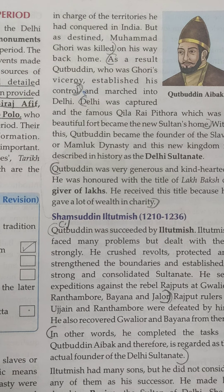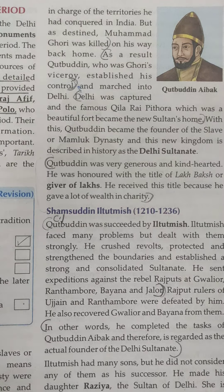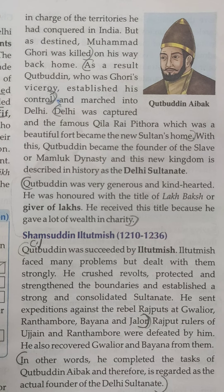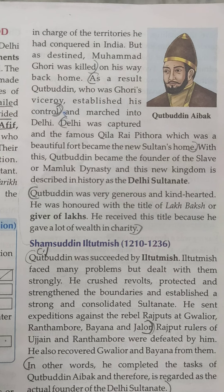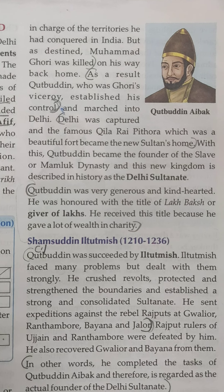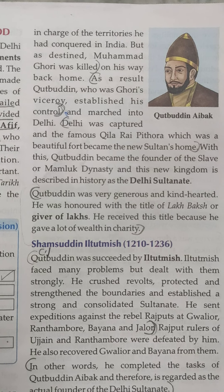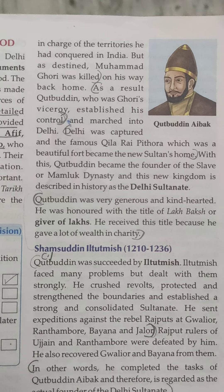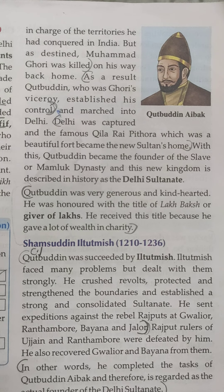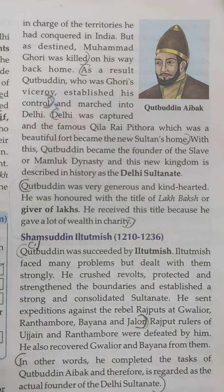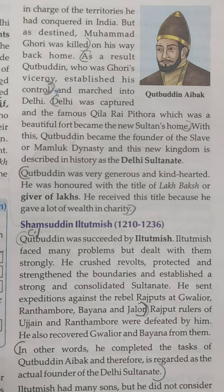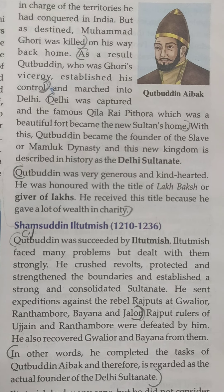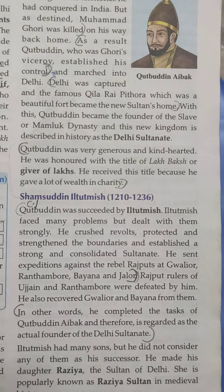As a result, Qutbuddin, who was Ghori's viceroy, established his own kingdom. Muhammad Ghori had won parts of India, and Qutbuddin marched into Delhi. He captured the famous Kila Rai Pithora, a beautiful fort, which became the new Sultan's residence. With this, Qutbuddin Aibak became the founder of the Slave and Mamluk Dynasty, and this new kingdom is described in history as the Delhi Sultanate.